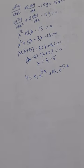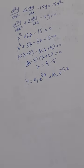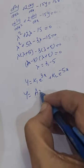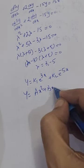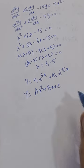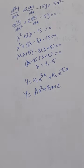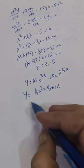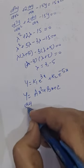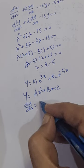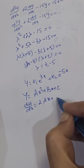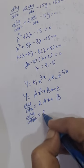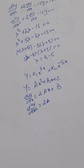For finding the particular integral we will use the method of undetermined coefficients. Let y = ax² + bx + c be the particular integral. Differentiating, dy/dx = 2ax + b, and d²y/dx² = 2a.